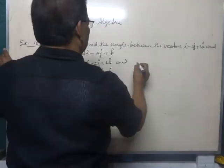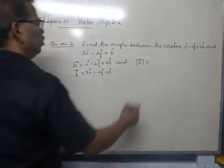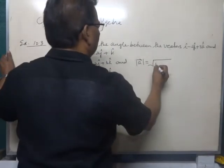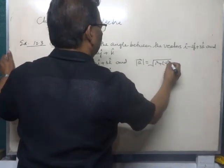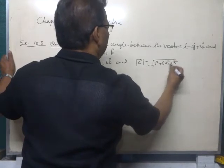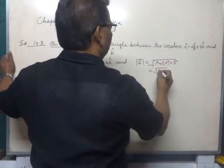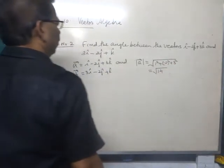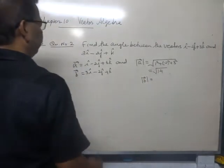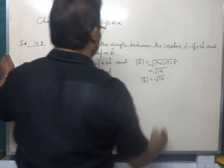We shall find out modulus of vector a that is equal to square root of 1 square plus minus 2 square plus 3 square. And it is equal to square root of 9 plus 4, 14. And modulus of vector b is equal to root 14, because the figures are same.